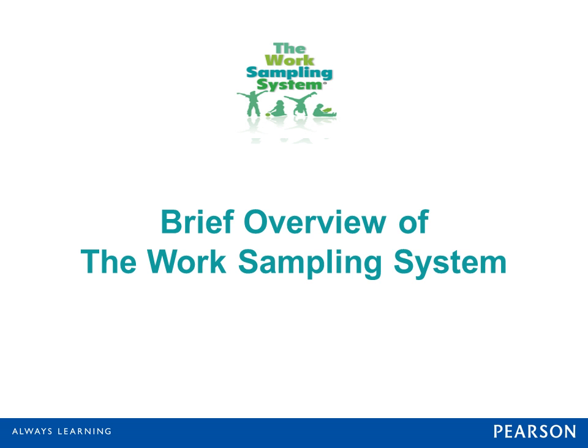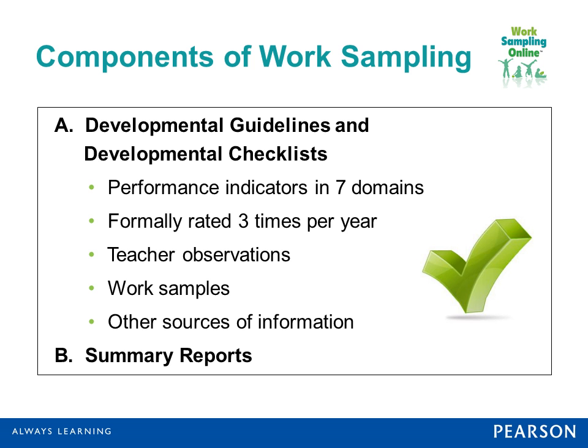When you think about the Work Sampling System, there are two major components: two parts that look at the child's development — developmental guidelines and developmental checklists. The developmental guidelines describe your end-of-age-level or grade-level expectations.